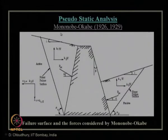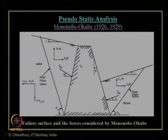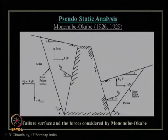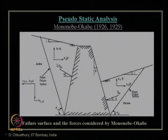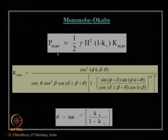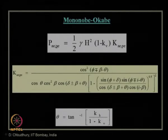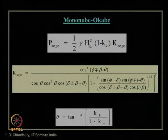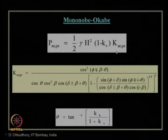We studied in detail the pioneering work proposed by Mononobe and Okabe. Mononobe and Matsuo proposed it in 1929 and Okabe in 1926 — the pseudo-static approach for a rigid gravity-type retaining wall. For a planar rupture surface with cohesionless soil only, this approach considers pseudo-static coefficients in the failure mass to estimate seismic passive and active earth pressure. The final equations: P_pe is seismic passive earth pressure and P_ae is seismic active earth pressure, expressed as half × γ × H² × (1 − k_v) × K_ae or K_pe.